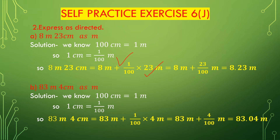23 divided by 100 is 0.23, because in 100 there are 2 zeros, so we place 2 digits after the decimal point. So, 23 divided by 100 is 0.23. Therefore, 8 meters plus 0.23 meters equals 8.23 meters. So, 8 meters 23 centimeters is 8.23 meters.